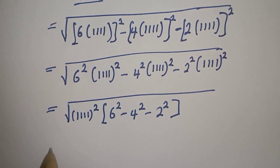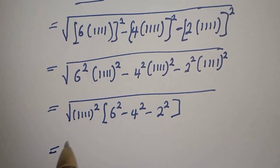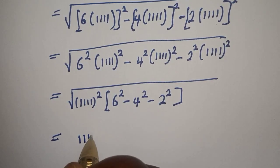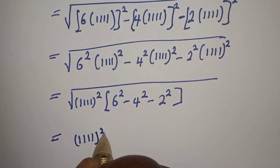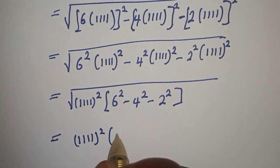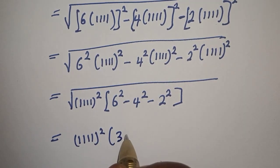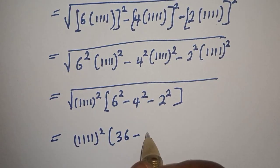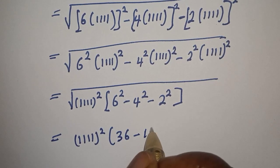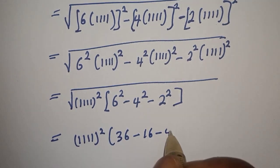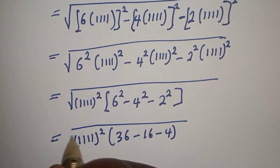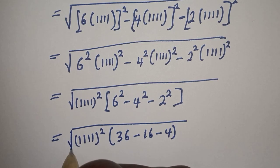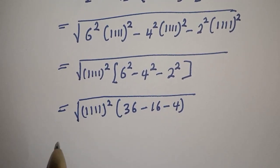Then this is equal to 1111, bracket: 6 squared is 36, minus 4 squared is 16, minus 2 squared is 4. Then the square root is equal to square root of 1111 squared bracket 36 minus 16 minus 4.